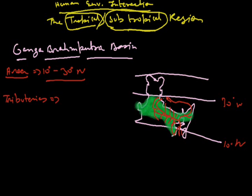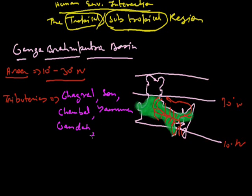When we come to the tributaries, these all are the tributaries of this region. They are Ghagra, Son, Chambal, Yamuna, Gandak, Kosi, and others.